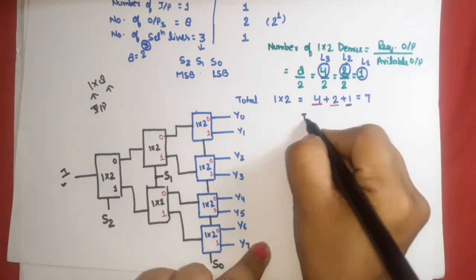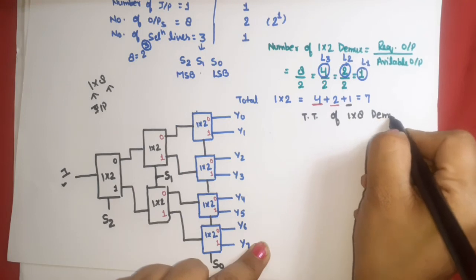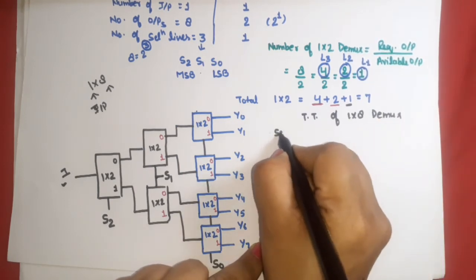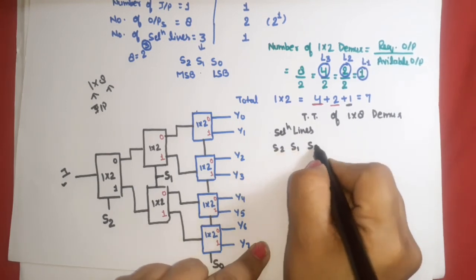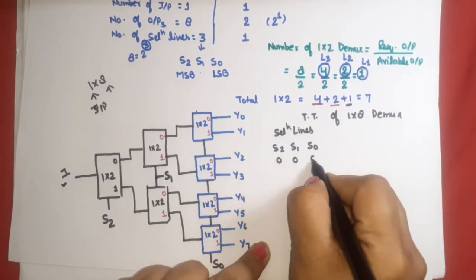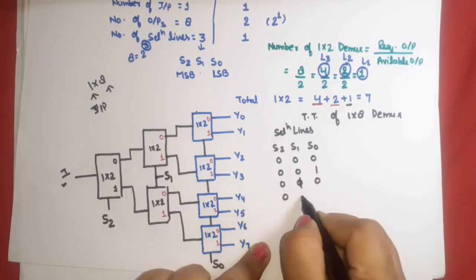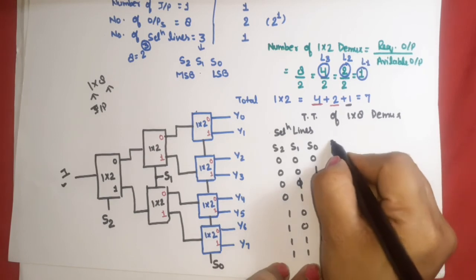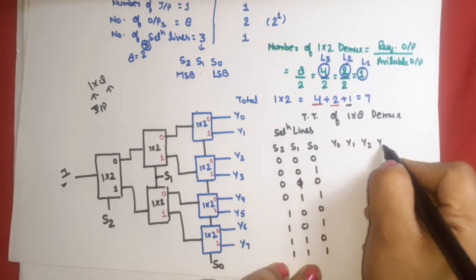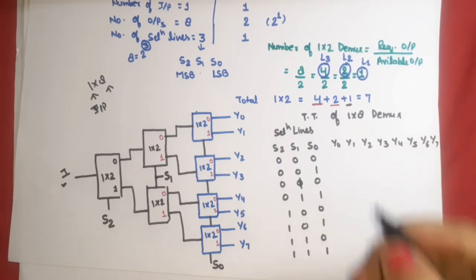Now let's discuss the truth table of the 1-to-8 demultiplexer. The selection lines are S2, S1, S0, giving 8 combinations because there are 3 selection line inputs. There are 8 outputs: y0, y1, y2, y3, y4, y5, y6, and y7. At any given time, the input i is routed to exactly one output.